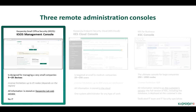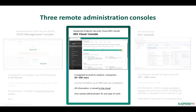Kaspersky Small Office Security is designed for networks of approximately 5 to 25 devices. This number is large enough to be managed centrally, but insufficient for hiring an administrator. That is why an optimal solution is a web console on the Kaspersky Lab website, named KSOS Management Console. Starting with 10 to 20 computers, Kaspersky Endpoint Security (KES) can already be recommended.